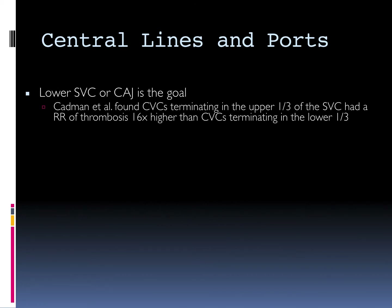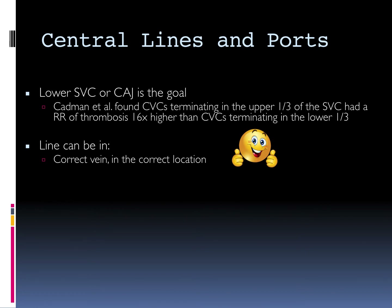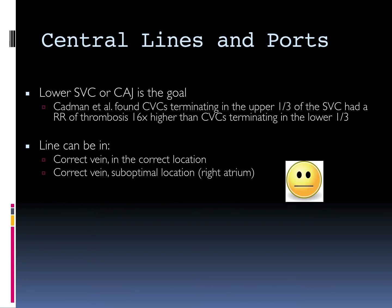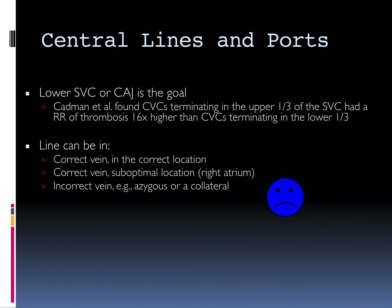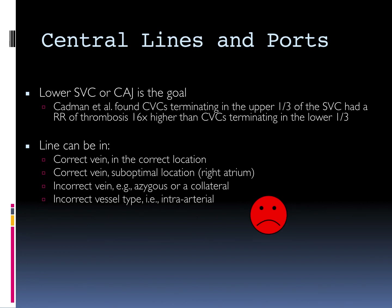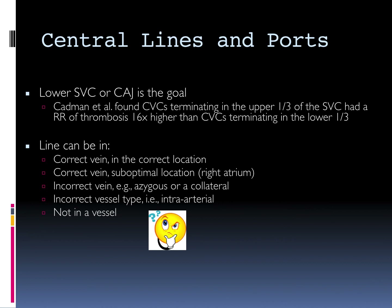In summation: the lower SVC or the cavoatrial junction is the goal in terms of location. The line can be in the correct vein in a correct location, or in a correct vein with a suboptimal location if it's too deep, for example within the right atrium. The line can be in an incorrect vein such as the azygous or collateral vein. The line can be in an incorrect vessel such as intraarterial, which should always prompt a vascular surgeon consult — an intraarterial catheter should never just be removed. Or last but not least, not in a vessel at all. Thank you very much.